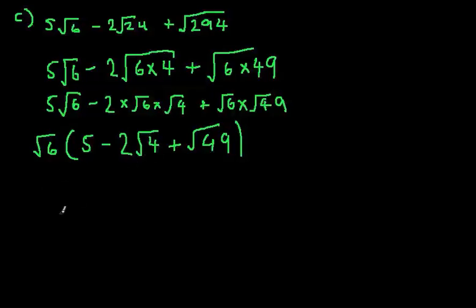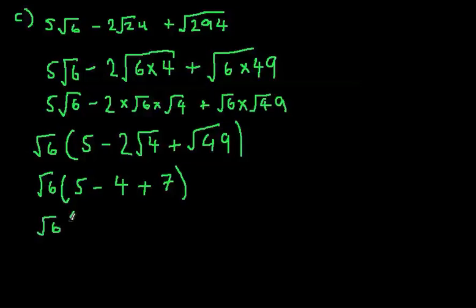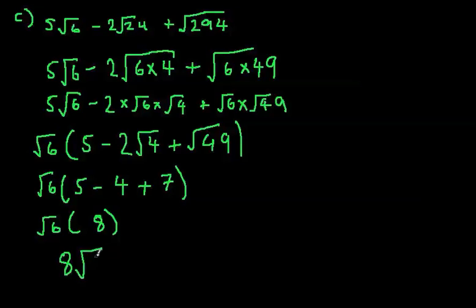Once you have done that, just clear up in here. So root 6 on the outside, 5 take away, root 4 is going to be 2. So that's basically 2 times 2, which is 4. And root 49 is obviously 7. Once you've done that, just clear up there. So root 6, 5 take away 4 is 1, add 7 equals 8. 8 times root 6 is 8 root 6, and that is our answer.